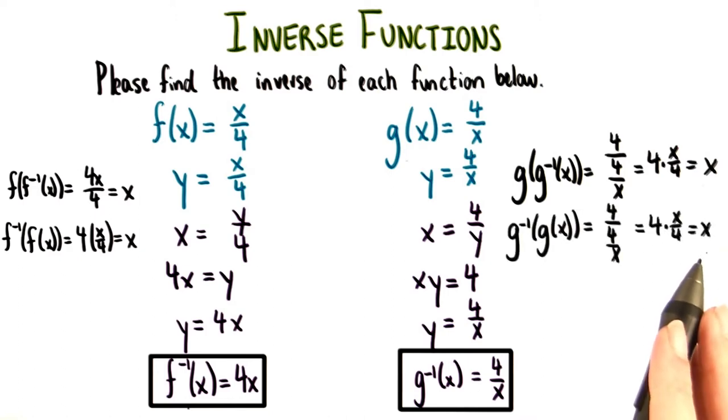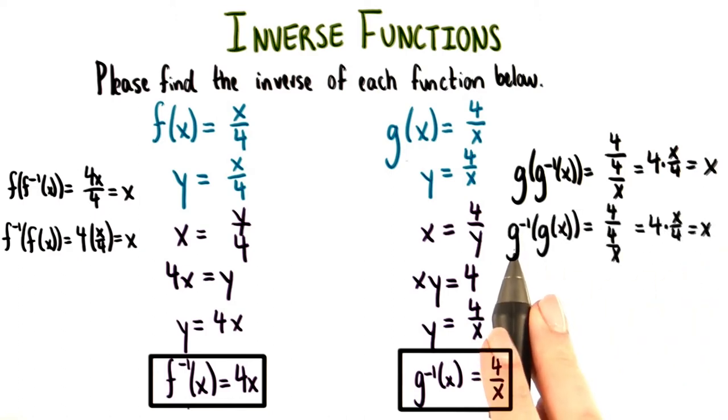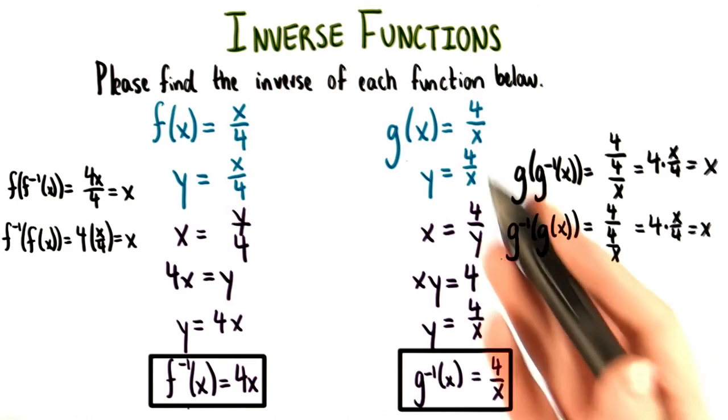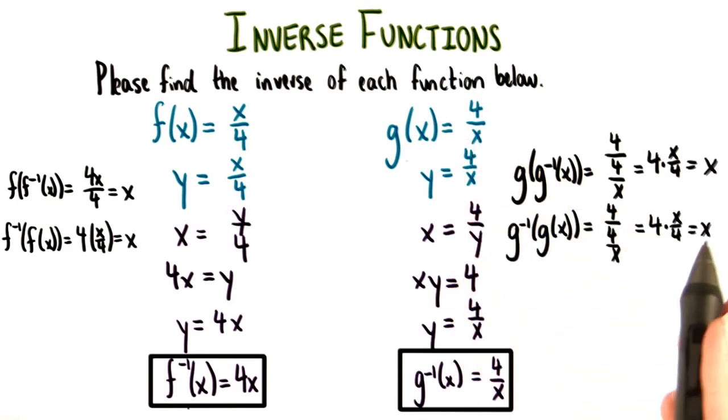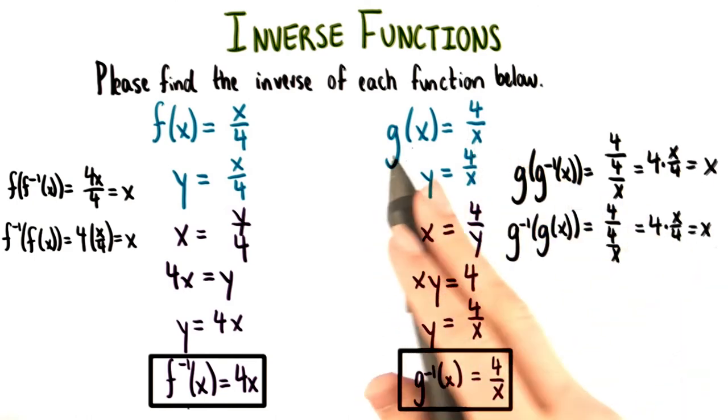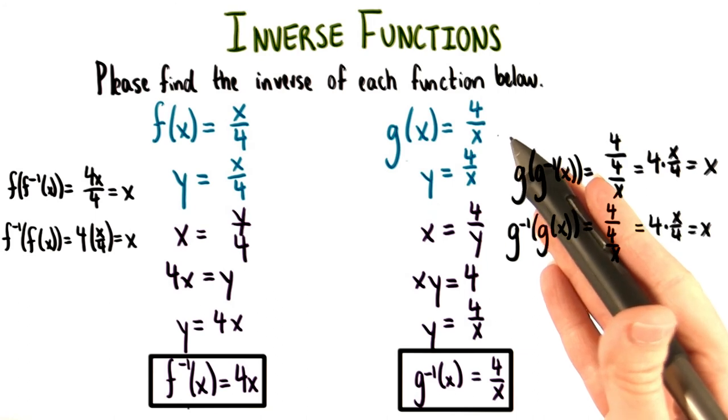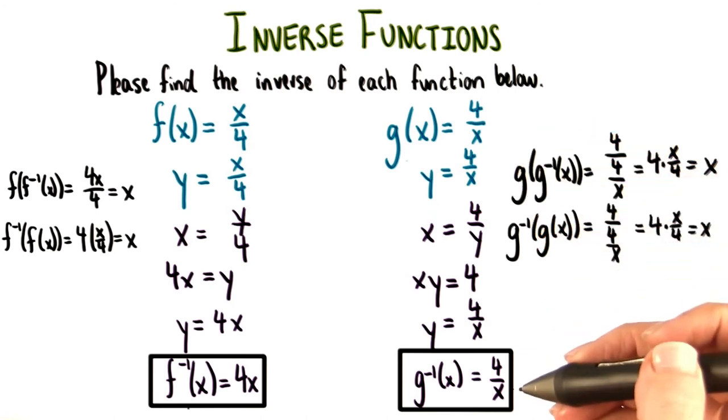Hmm. We get exactly the same thing for g inverse of g of x, since g inverse and g are the same thing. So we also end up with x for this. g here is a special kind of function. It's the inverse of itself.